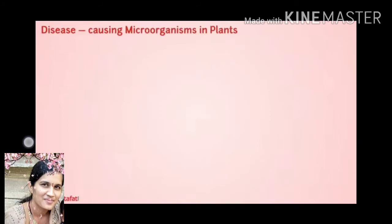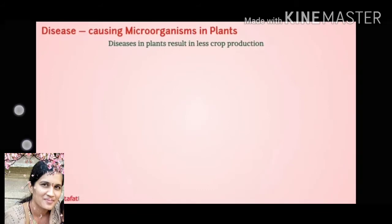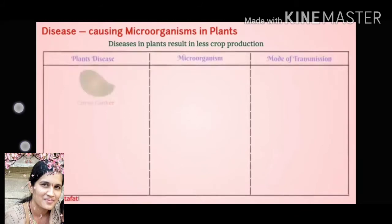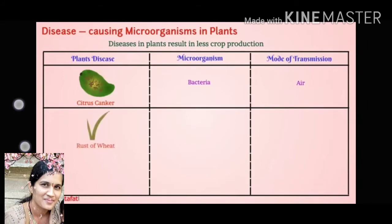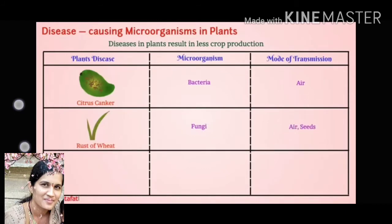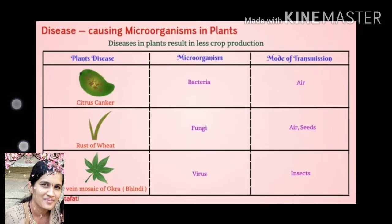Disease-causing microorganisms in plants. Several microorganisms cause diseases in plants. Citrus canker is caused by bacteria and is transmitted through the air. Rust of wheat is caused by fungus and is transmitted through air as well as seeds. Yellow mosaic of okra (bhindi) is caused by a virus and its mode of transmission is through insects.